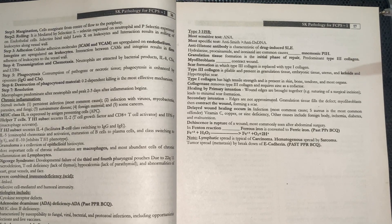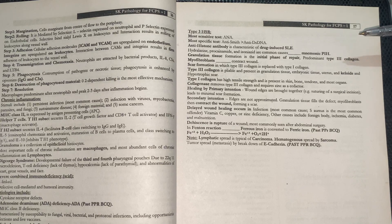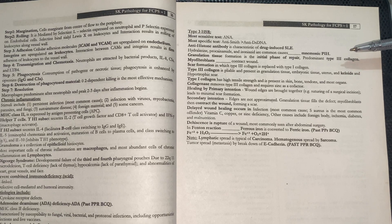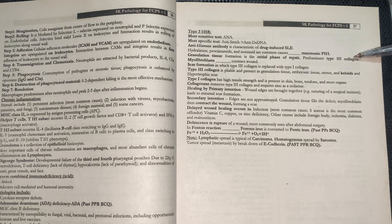Type 3 hypersensitivity occurs in SLE (systemic lupus erythematosus). The most sensitive test is ANA, and the most specific tests are anti-Smith antibodies and anti-double-stranded DNA antibodies. Drug-induced lupus is caused by hydralazine, procainamide, and isoniazid.